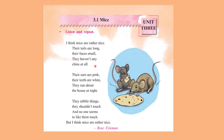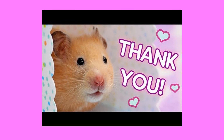Now let us do the rhyming words in the poem. Which are the rhyming words? Mice and nice. Small and all. White and night. Touch and much. So children, we have learned the rhyming words also in the poem. Now learn the poem and recite it nicely — don't rush with it. Thank you children, I hope you have understood the poem. Learn the poem and recite it nicely. Thank you.